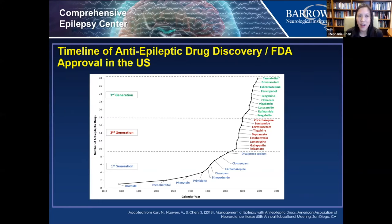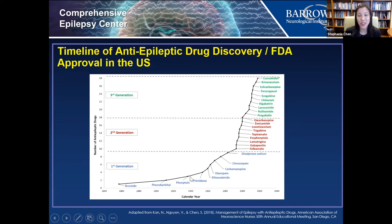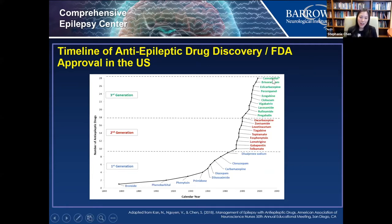This timeline shows the approval of seizure medications in the USA. The first seizure medication came out in 1860 — bromide. We still see some patients on phenobarbital or phenytoin (Dilantin), which came out in the early 1900s. Around the 1990s and 2000s there was a boom of epilepsy drugs, and recently many more have come out, including cannabidiol (Epidiolex). However, despite new treatments, about 30% of patients still continue to have breakthrough seizures, and those patients are candidates for surgery.